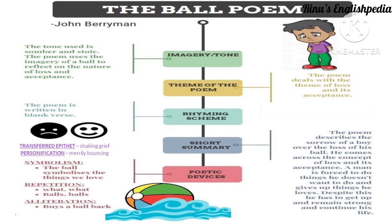The next literary device is personification — giving human quality to an inanimate object or idea. Here, 'merrily bouncing' — being merry is a human quality that has been given to the bouncing of the ball, therefore it is personification. Then symbolism: the ball symbolizes the things we have and is also a symbol for the loss we may have to bear in our lives. Repetition has been used when 'what is he to do' is repeated, and also in 'balls, balls' — when a word is repeated for emphasis, that is the literary device repetition.